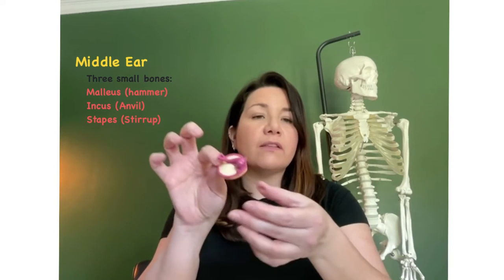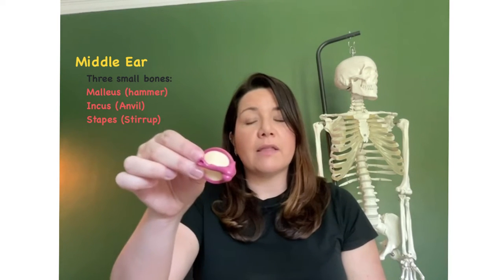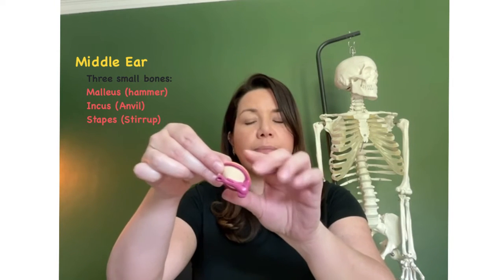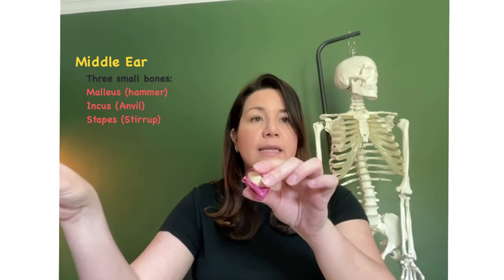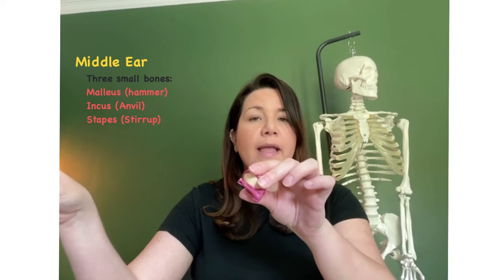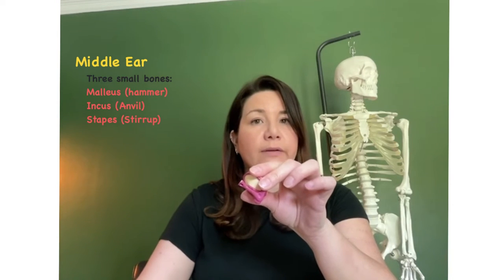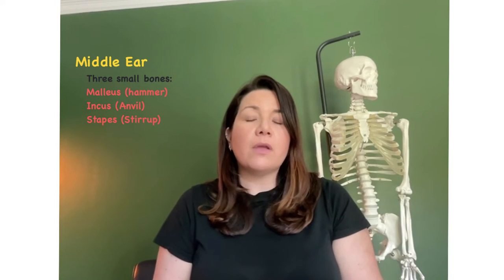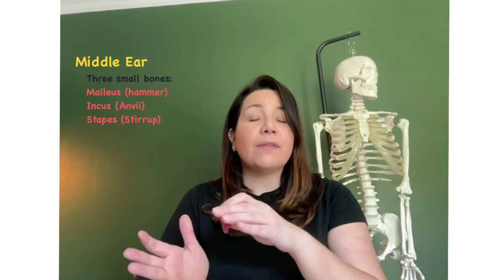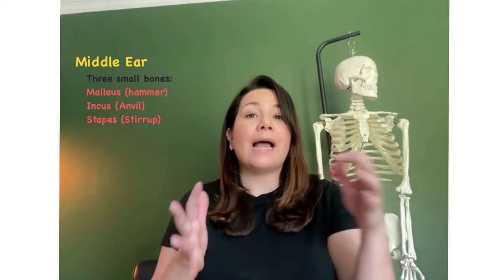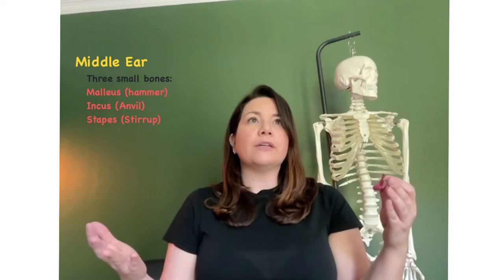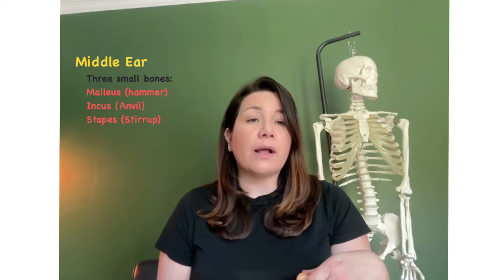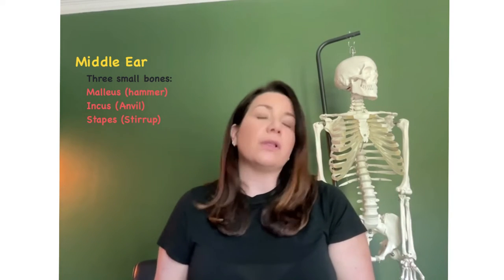These are the smallest bones in the body — tiny little bones that connect to the eardrum. They also then connect to the inner ear, and that's going to allow us to hear sound. We're just going through the anatomy in this video. In my next video, I'm going to talk about how we hear, because in order to really understand how we hear, we first need to know how the ear is made up. So that's the middle ear.